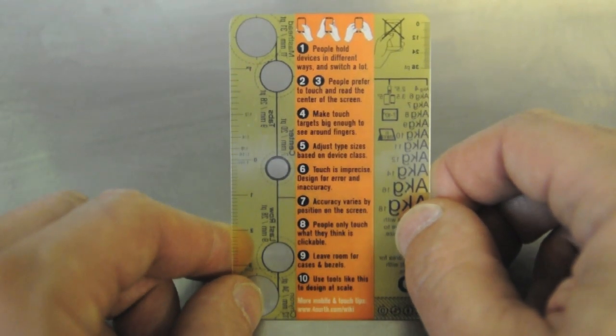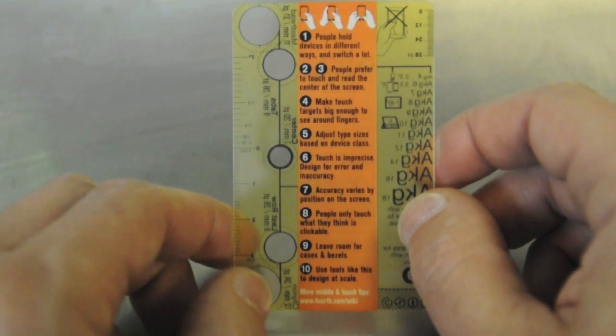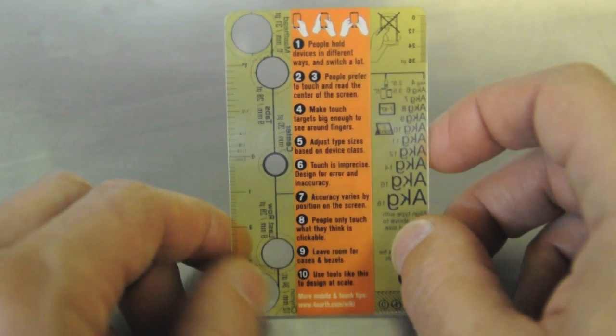Most importantly, almost, that people prefer to touch and read in the center of the screen. That you need to make touch targets big enough to see around your fingers.